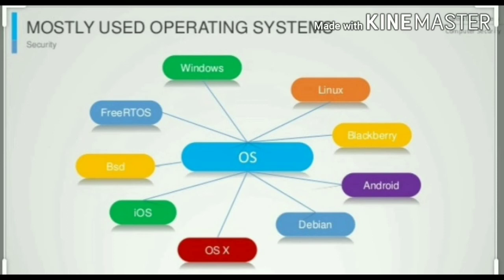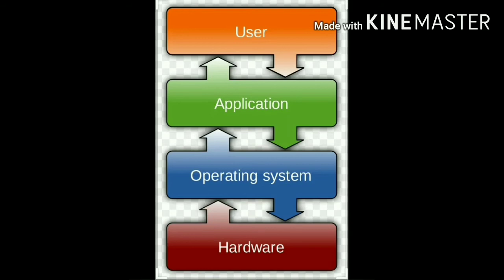Examples of operating systems used nowadays are Android, Microsoft Windows, Mac OS X, and Windows Phone. The various layers of a computer and their interactions are: User, Application Software, Operating System, and Hardware.